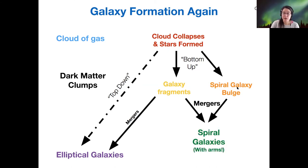the bulge, halo, and other galaxy fragments eventually merge together to form our modern-day spiral galaxies with their spiral arms. So all of this is part of that bottom-up galaxy formation.